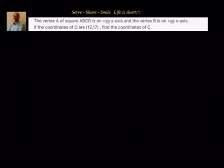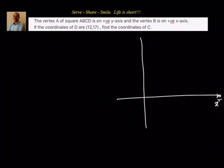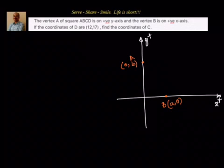Let's try to draw a rough graph. Let's say this is our positive x-axis and this is our positive y-axis. Vertex A of square ABCD is on positive y-axis, so vertex A is here, and vertex B is on positive x-axis. We will say A has coordinates (A, 0) and the y-intercept point has coordinates (0, B). We have been given that coordinates of D are 12 comma 17, and we have to find the coordinates of C.